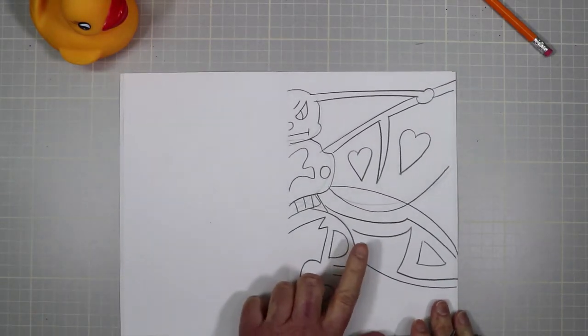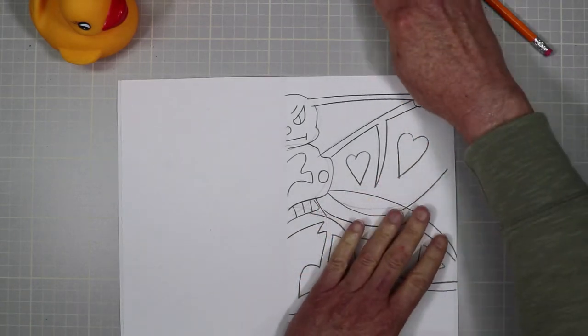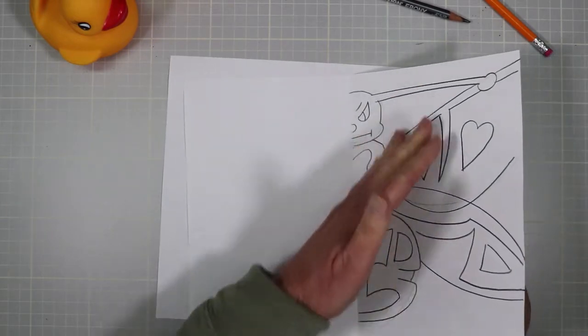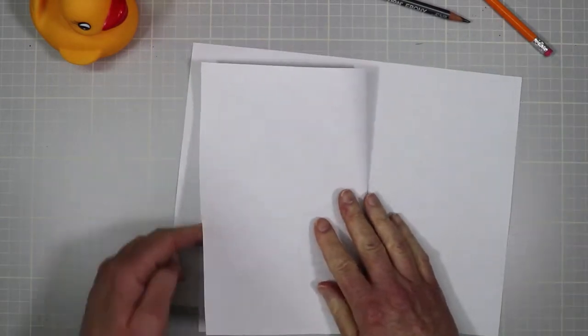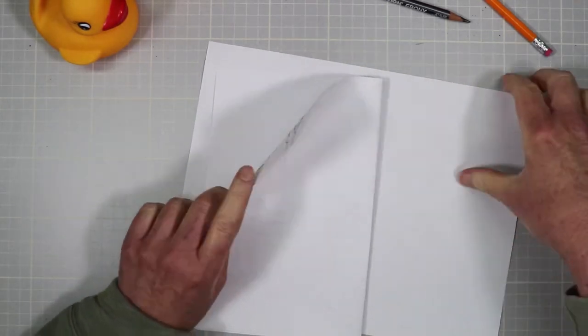To show you how we transfer these lines over, since the lines are dark, we can do that. I will take the bug, make a bug sandwich. So the bug here goes inside. So my dark lines here will be in contact with the opposite side of the paper.